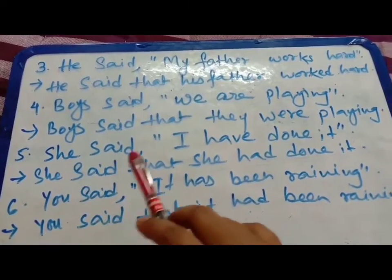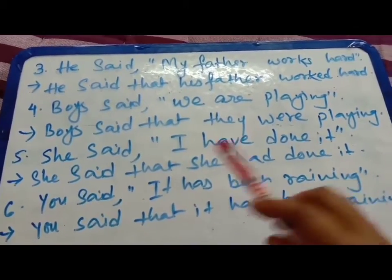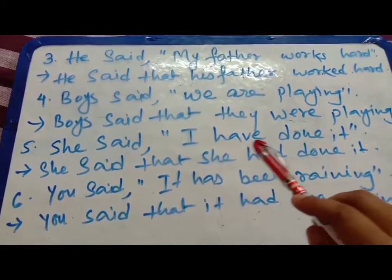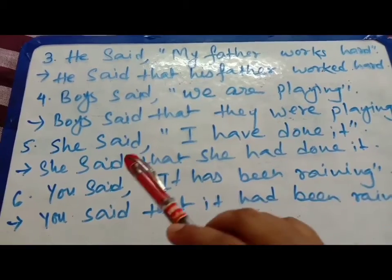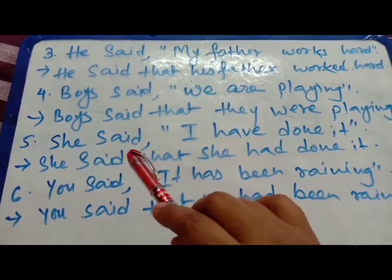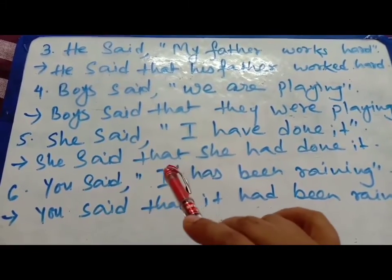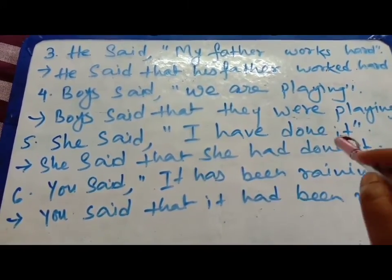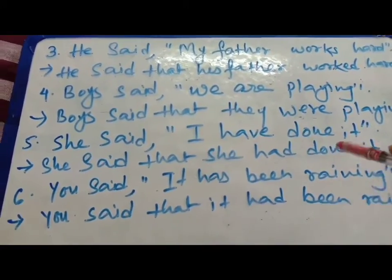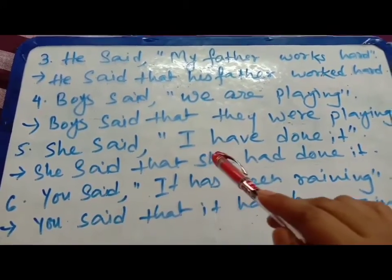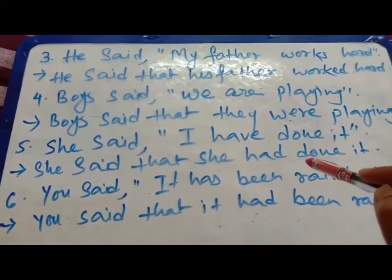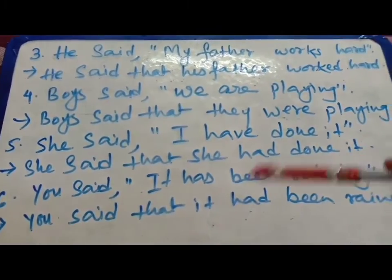Number five: She said, I have done it. Said is the reporting verb and have done is the reported verb — it is in present perfect. Since the reporting verb is simple past, it will become past perfect. After removing the inverted comma, she said that — and I becomes she. Have done becomes had done. So: she said that she had done it.